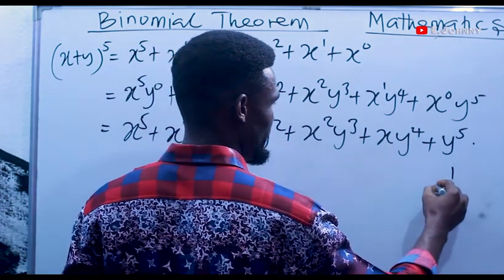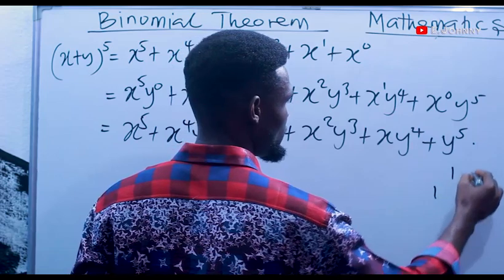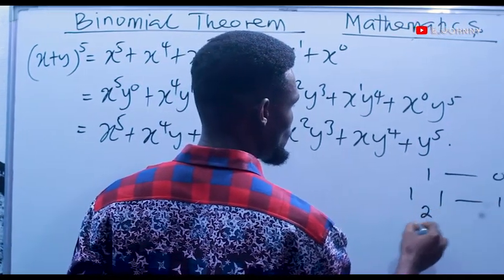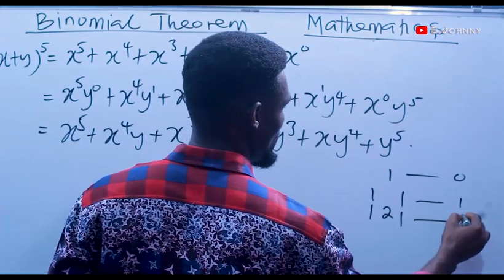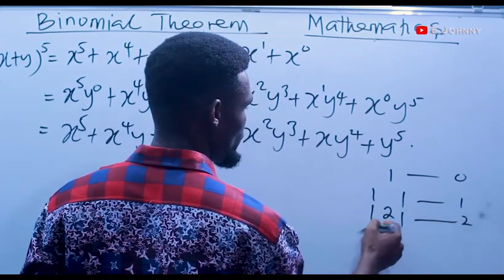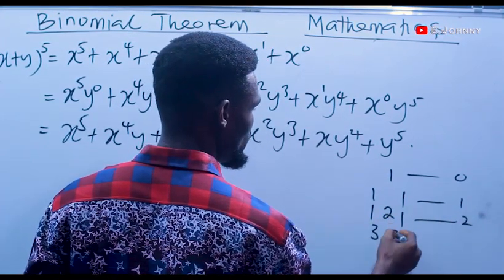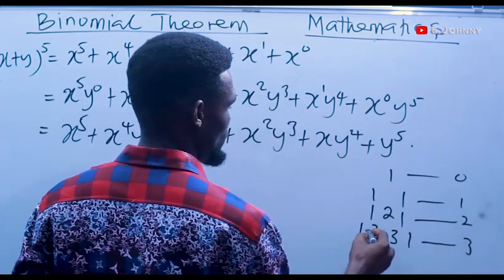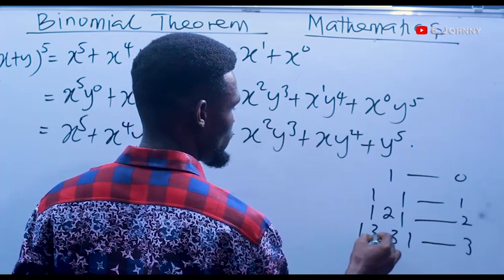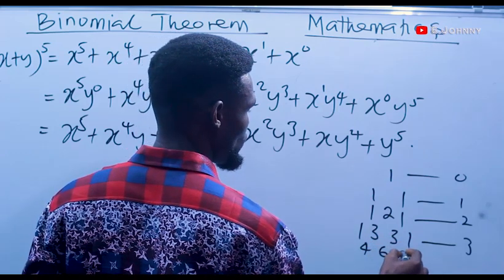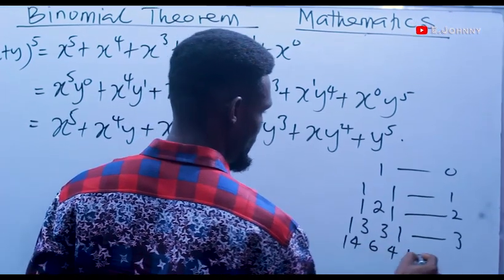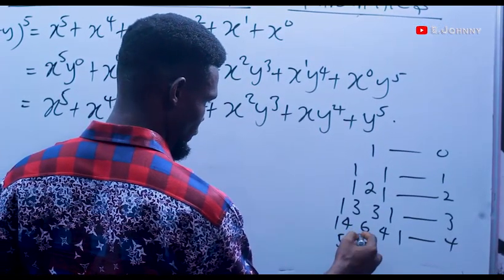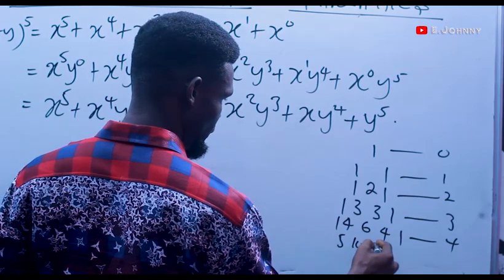This is power 0: 1. Power 1: 1, 1. That's power 2: 1, 2, 1. Then 1 plus 2 is 3, 2 plus 1 is 3. That is power 3: 1, 3, 3, 1. Then 1 plus 3 is 4, 3 plus 3 is 6, 3 plus 1 is 4. That is power 4: 1, 4, 6, 4, 1.